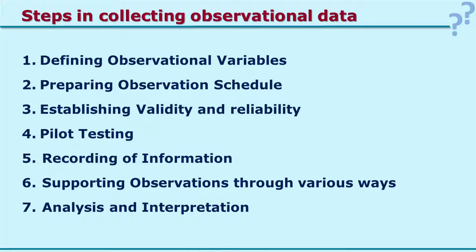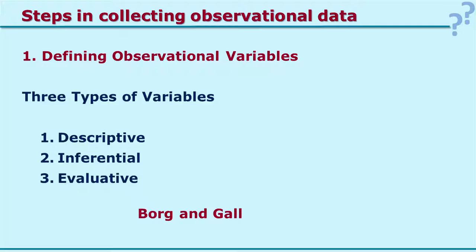There are seven major steps involved in using observation technique: one—defining observational variables; two—preparing observation schedule; three—establishing validity and reliability; four—conducting pilot testing; five—recording information using the observation schedule; six—supporting observations through various ways; and seven—analyzing and interpreting the data.